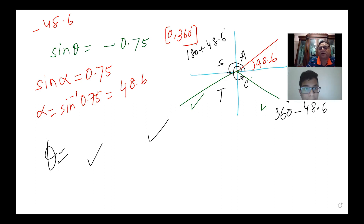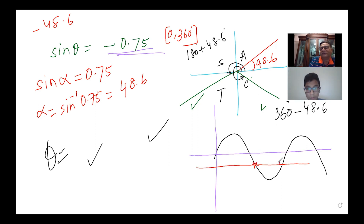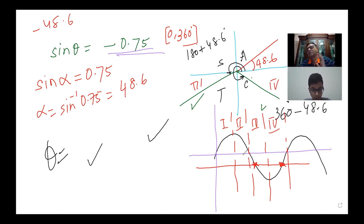It makes sense because the sine graph shows that if we're looking for a value of −0.75, we're looking for two points — one in quadrant three and one in quadrant four. The five critical values of the sine graph are at the origin and on the axes. That is how you use the related acute angle and co-terminal angles.